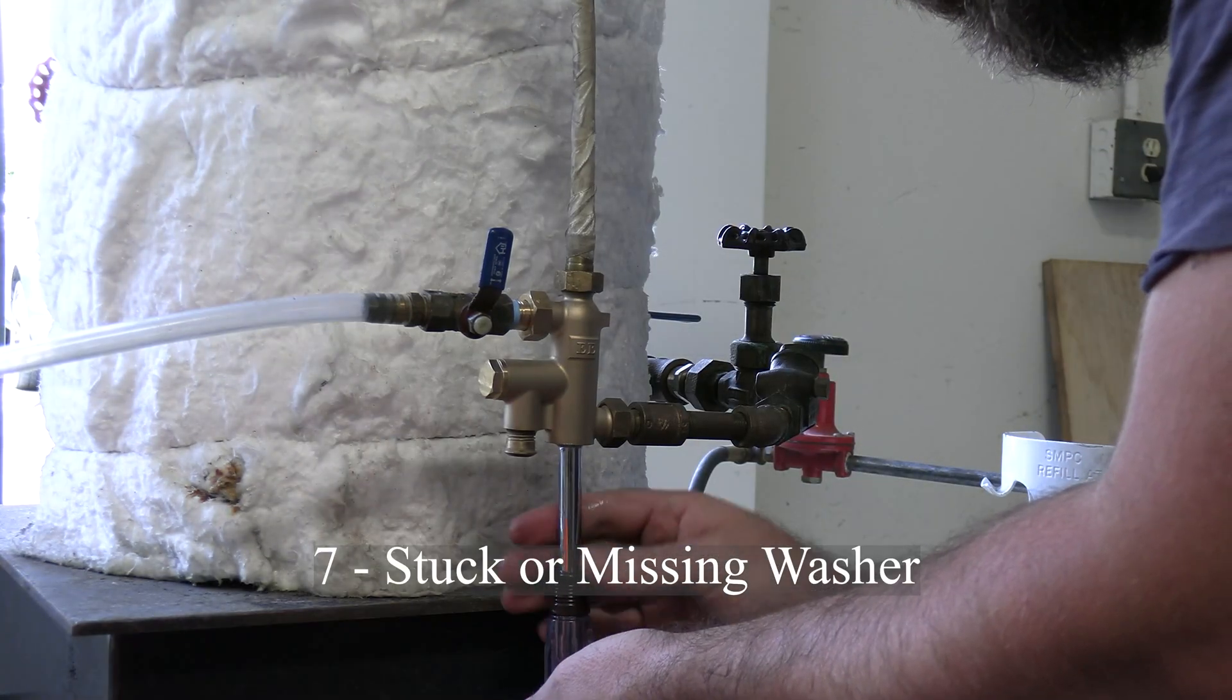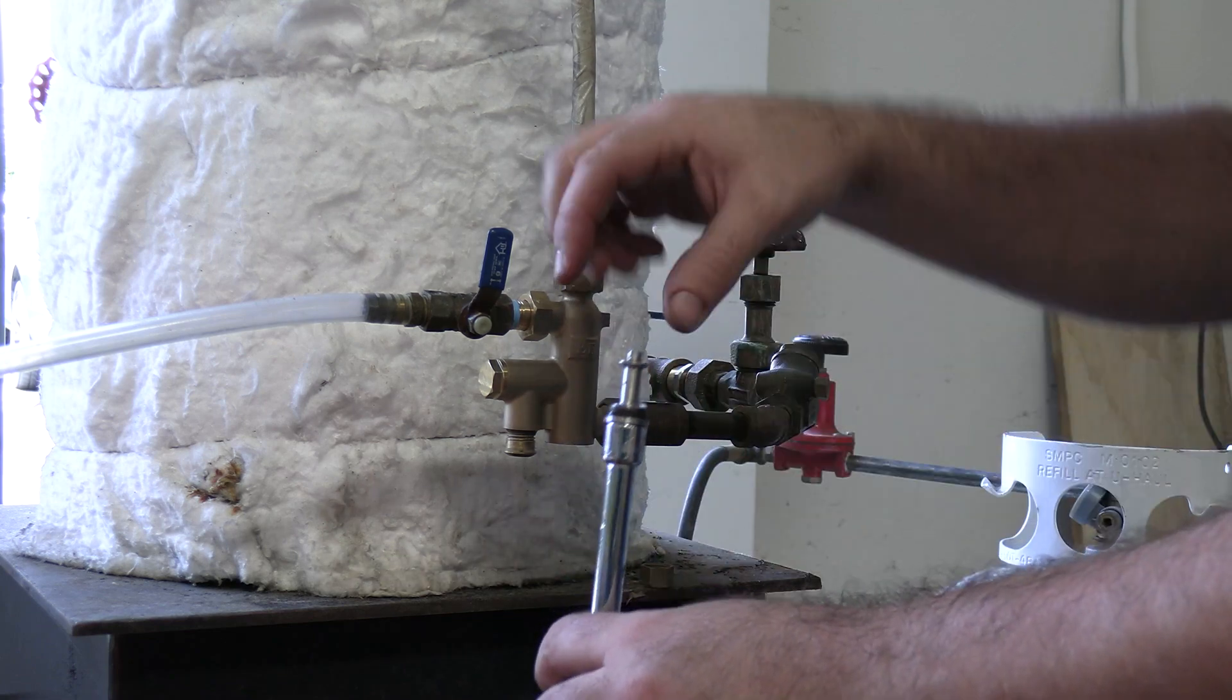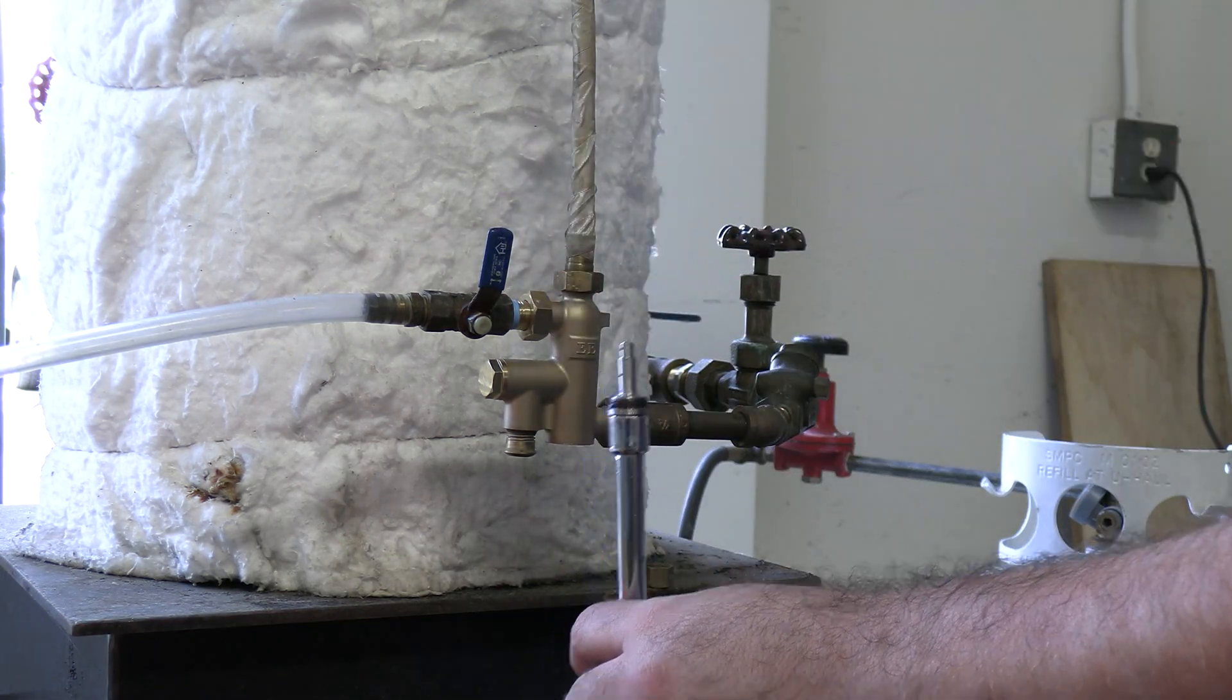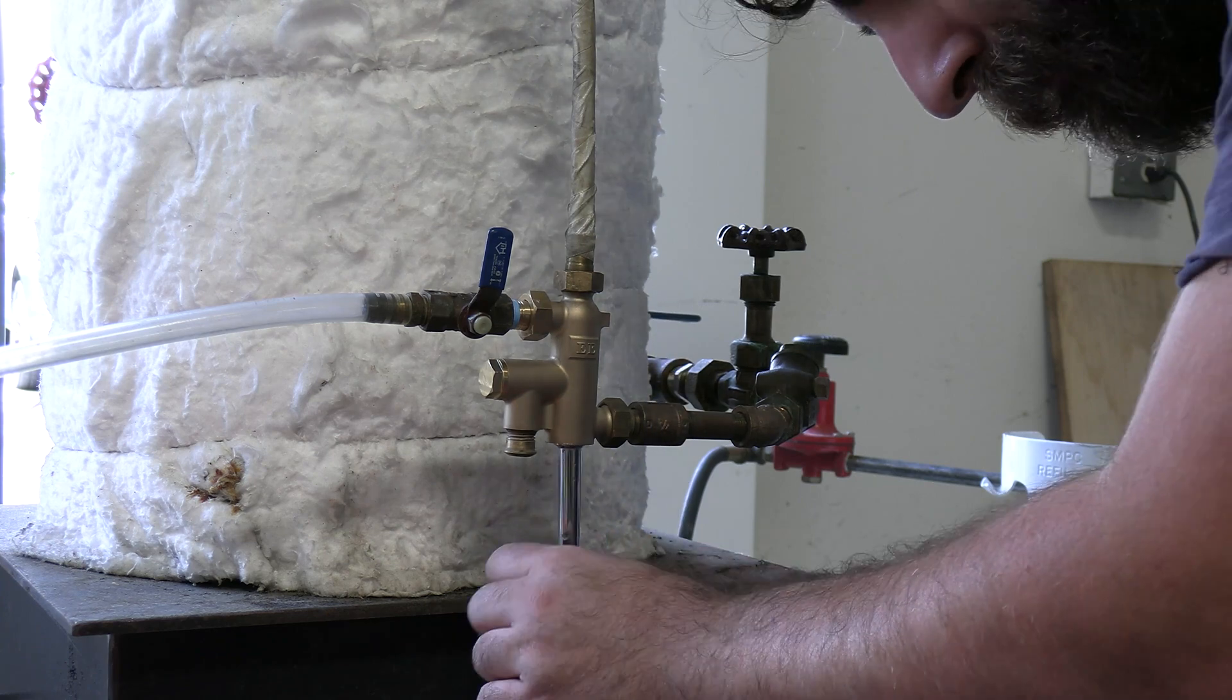A stuck washer has symptoms similar to an air leak. We can simulate this by simply removing the washer. So if you forget to put the washer back in after cleaning, this is also what you'll observe.